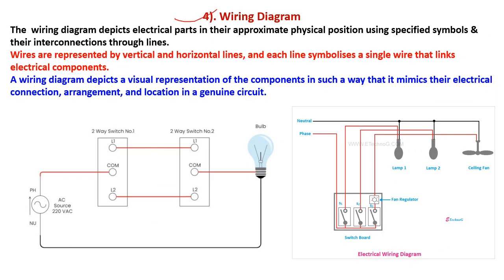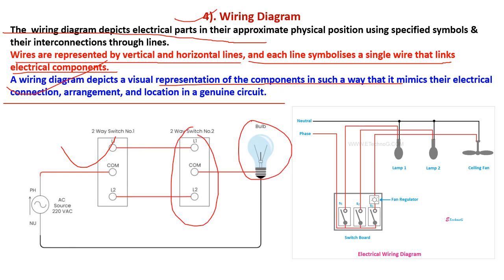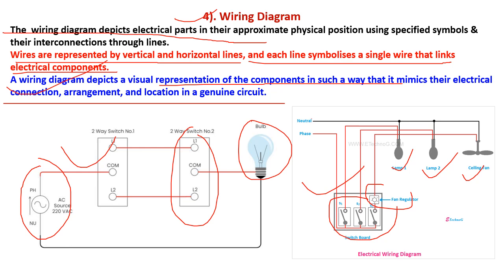The next one is the wiring diagram. The wiring diagram depicts cylindrical parts in their approximate physical position using specified symbols and their interconnection through lines. Wires are represented by vertical and horizontal lines, and each line symbolizes a single wire linking electrical components. The wiring diagram depicts a visual representation of components that mimics their electrical connections, arrangement, and location in the genuine circuit. Here in the circuit we see the bulb, switches, and AC source. The diagram includes switches, fan regulator, lamp 1, lamp 2, and ceiling fan.